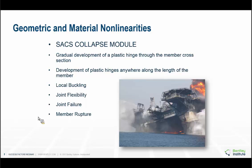For SACS users, you know that we have a module called Collapse. Basically, what this allows you to do is to design against some of these extreme events. Some of the features include: it allows the gradual development of a plastic hinge through the member cross-section, and it also allows the development of plastic hinges anywhere along the length of the member. Other aspects like local buckling, joint flexibility, joint failure, and member rupture are also taken care of.